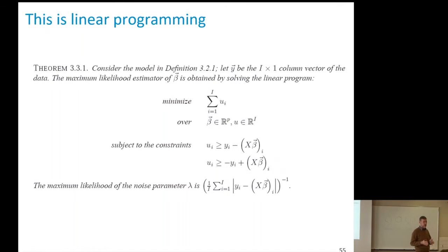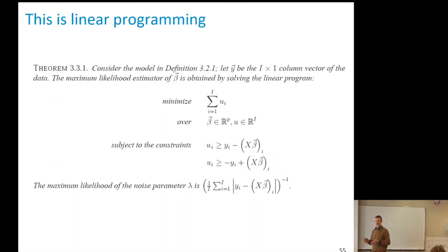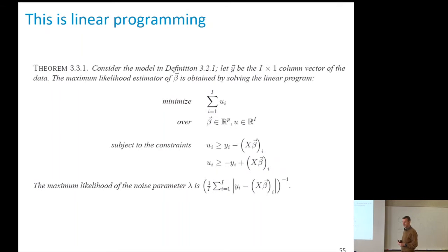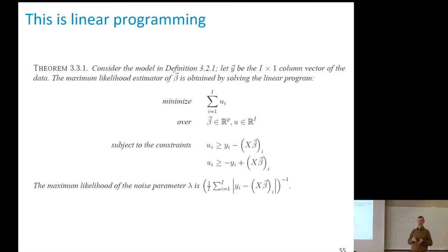Take-home message: solving a linear regression problem with L1 instead of L2 is not as nice — we don't have a closed-form formula — but it's a linear program. Linear programs can be solved relatively easily, up to hundreds of thousands of variables. So whenever we have a choice between L2 and L1 and there's no other evidence that L2 is the correct model, L1 is more robust and perfectly doable.